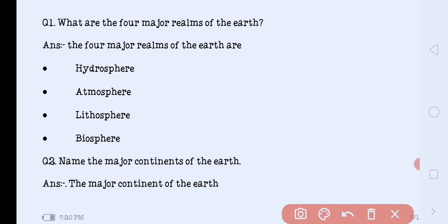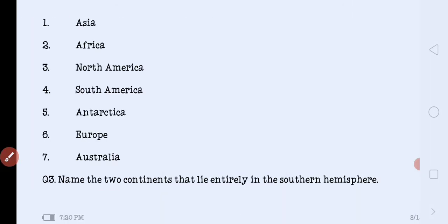Next. Name the major continents of the earth. What are the main continents on earth? The major continents on the earth according to size are Asia, Africa, North America, South America, Antarctica, Europe, and Australia. These are the seven continents on the earth.